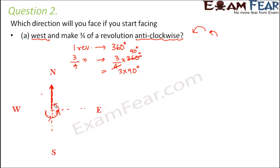Let's look at the second question. You are facing south and you make one full revolution. It says you start from south and you make one full revolution. Again we have our directions. Initially you are facing towards south. So one full revolution. Full revolution means how much?